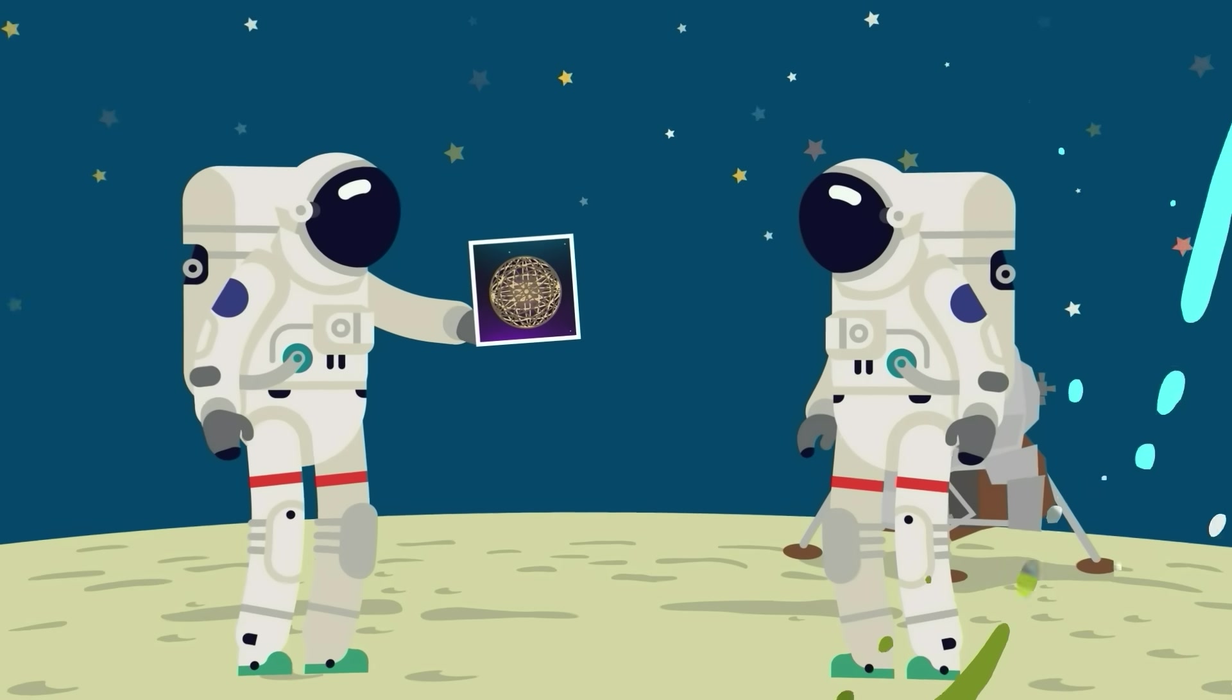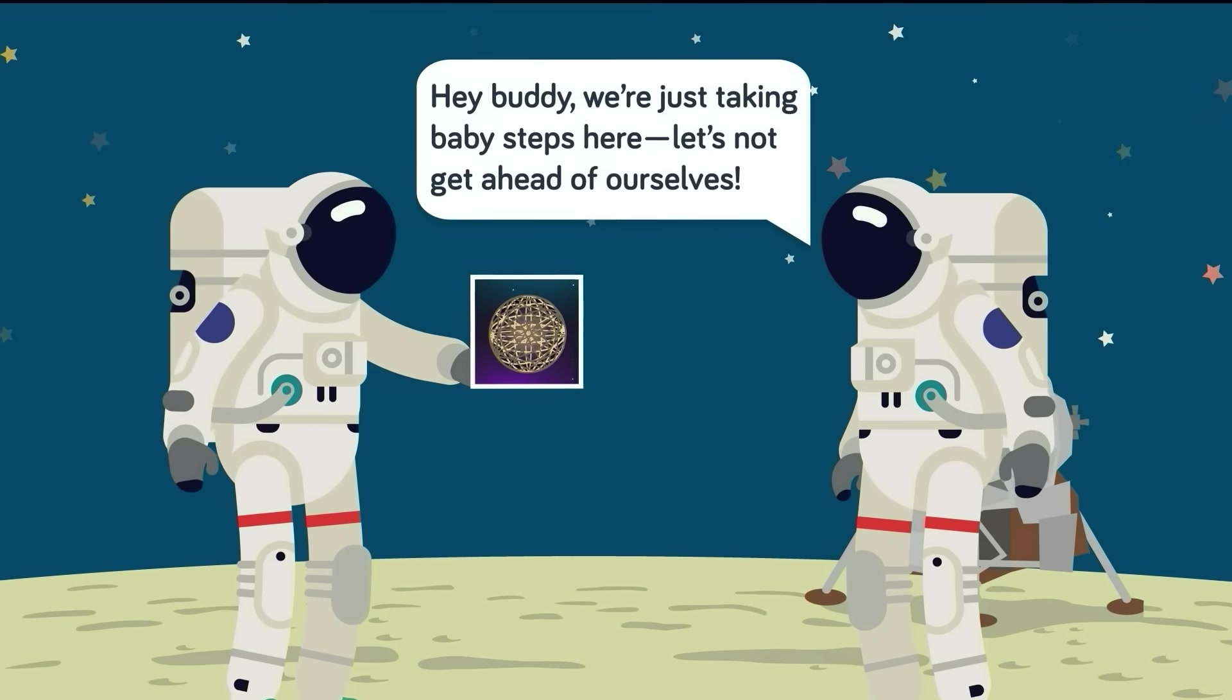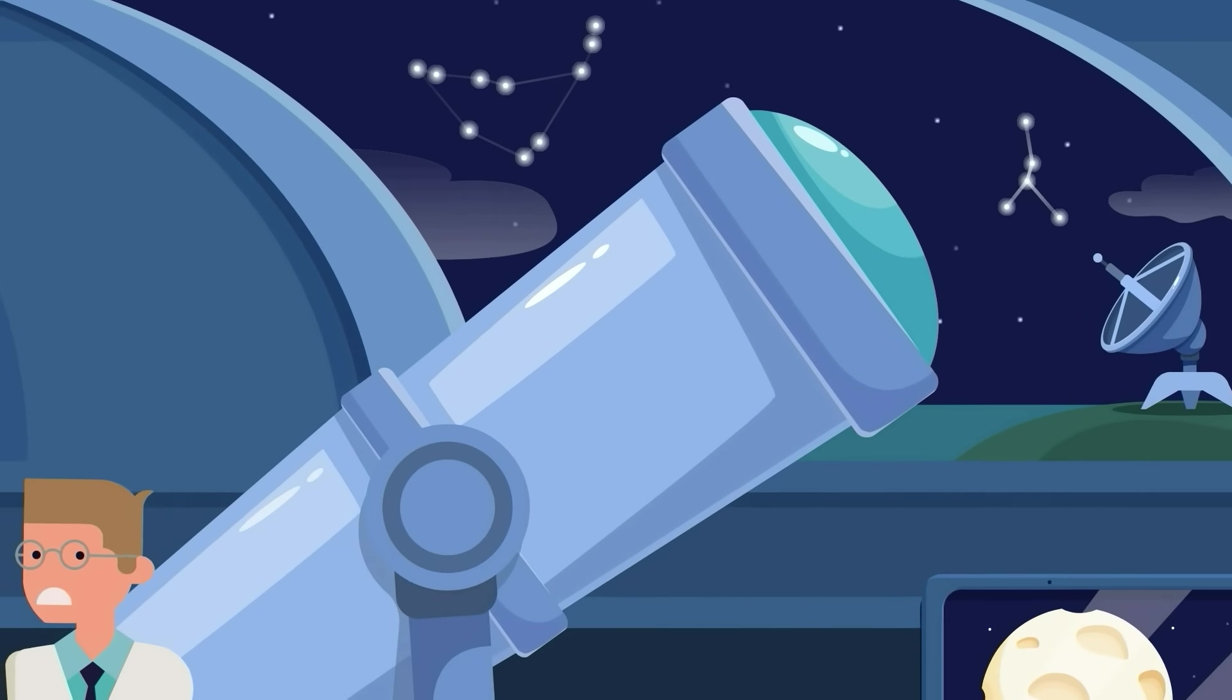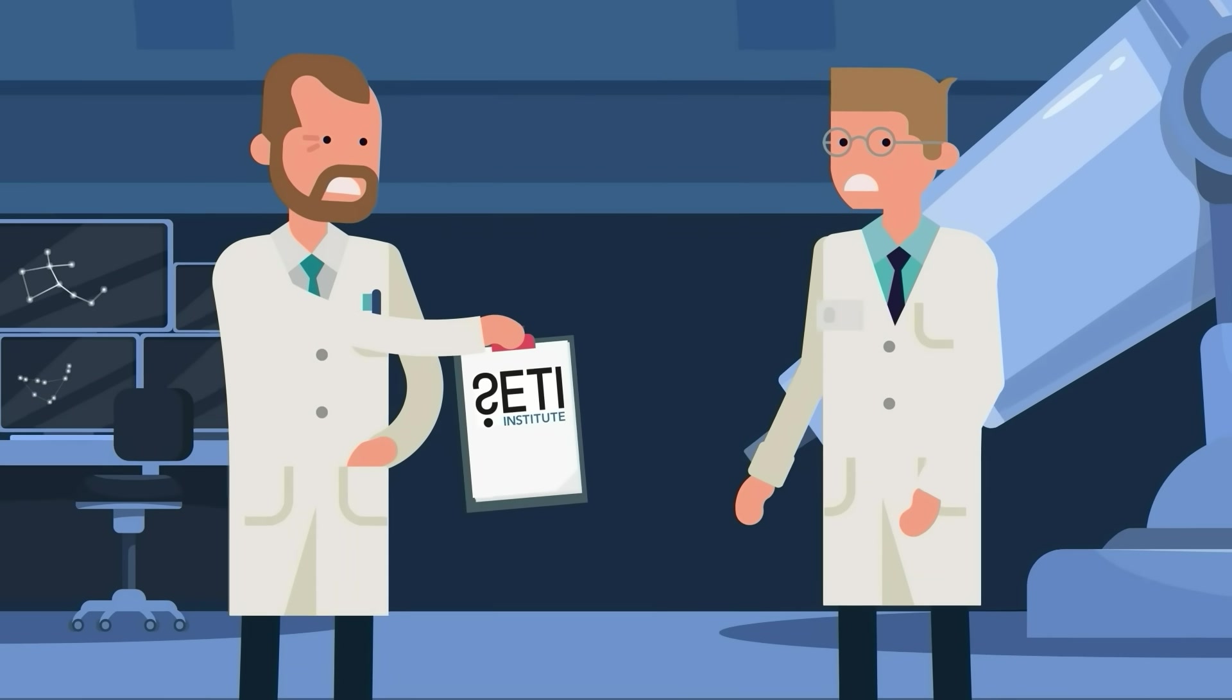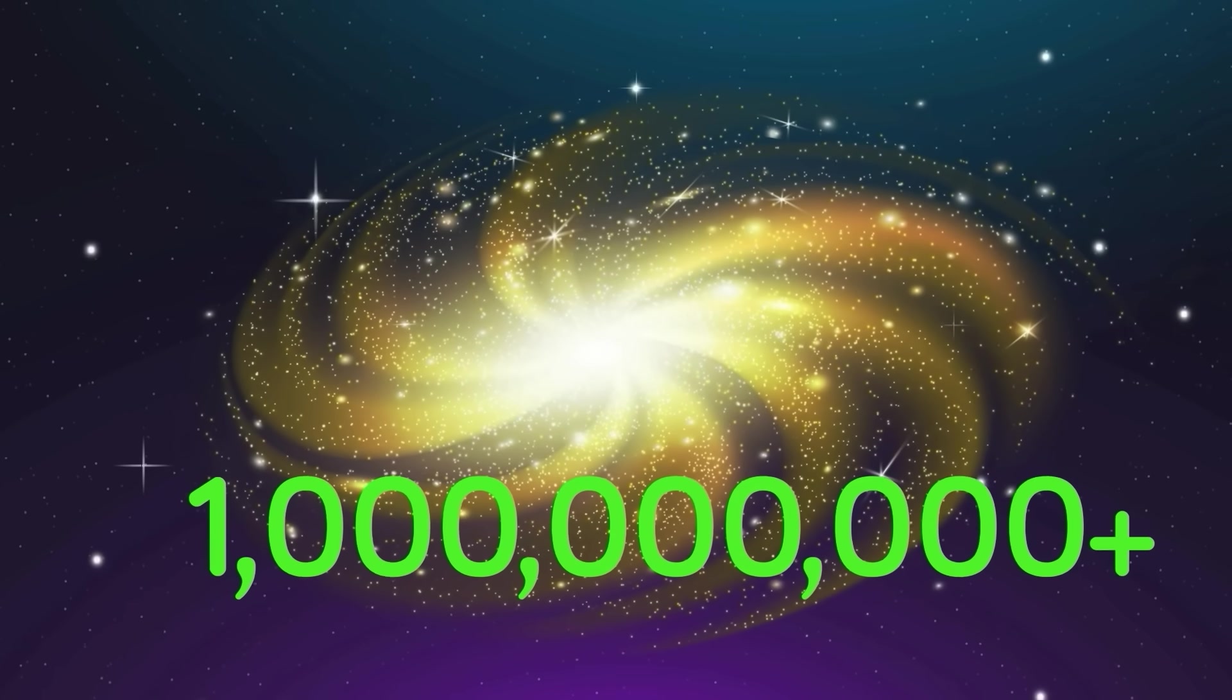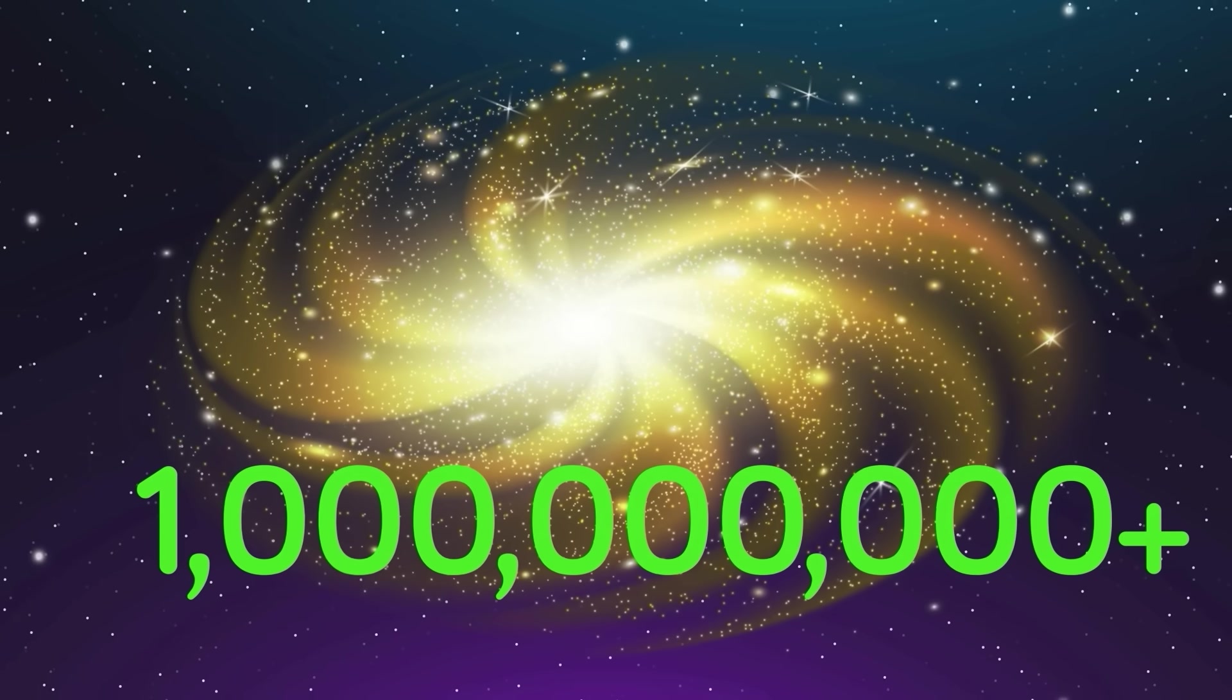When Dyson first popularized his theory, it was entirely speculative. We had just landed on the moon, and studying distant stars and planets was still a major challenge. But as technology advanced with more powerful telescopes and the establishment of the SETI Institute, the search for extraterrestrial life became a serious scientific pursuit. Out of all the stars in the observable universe, the Milky Way alone contains over a billion, making it the most practical place to start looking.